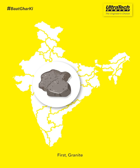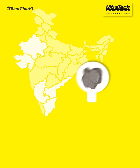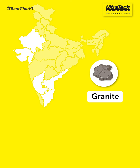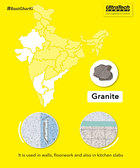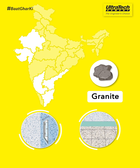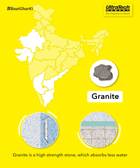First, granite. This is a type of igneous rock found in southern India. It is used in walls, floor work, and also in kitchen slabs. Granite is a high strength stone which absorbs less water.